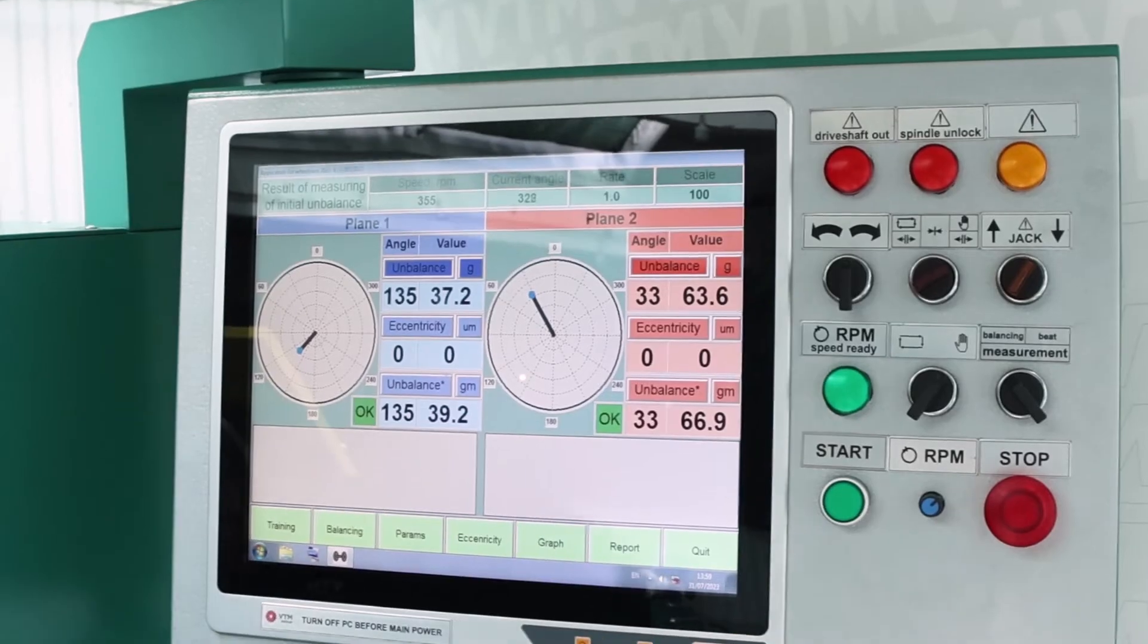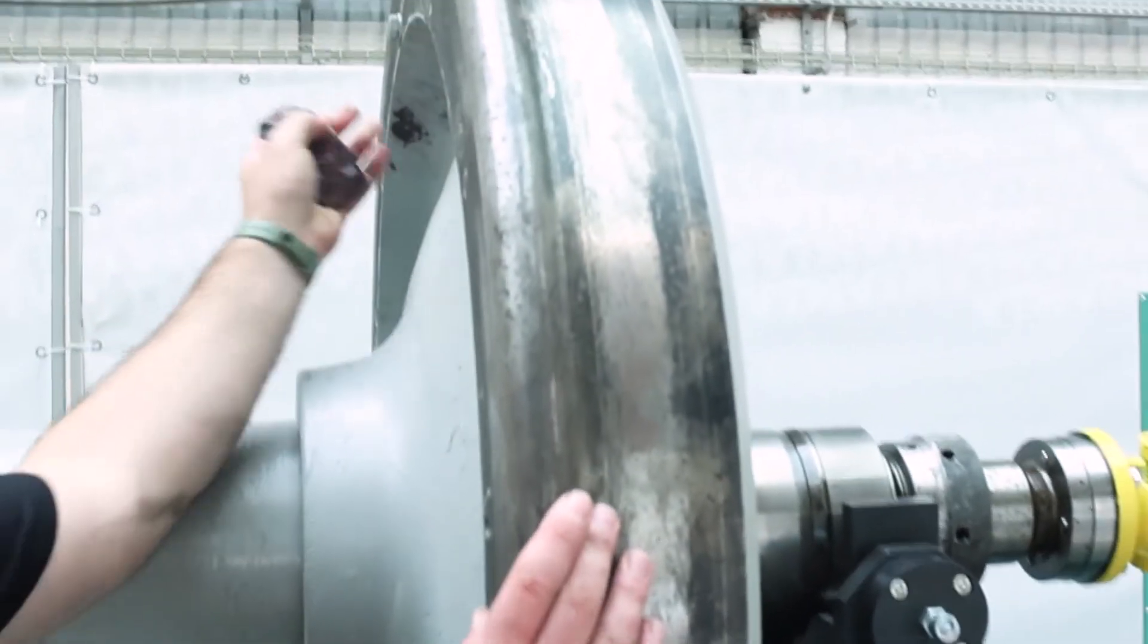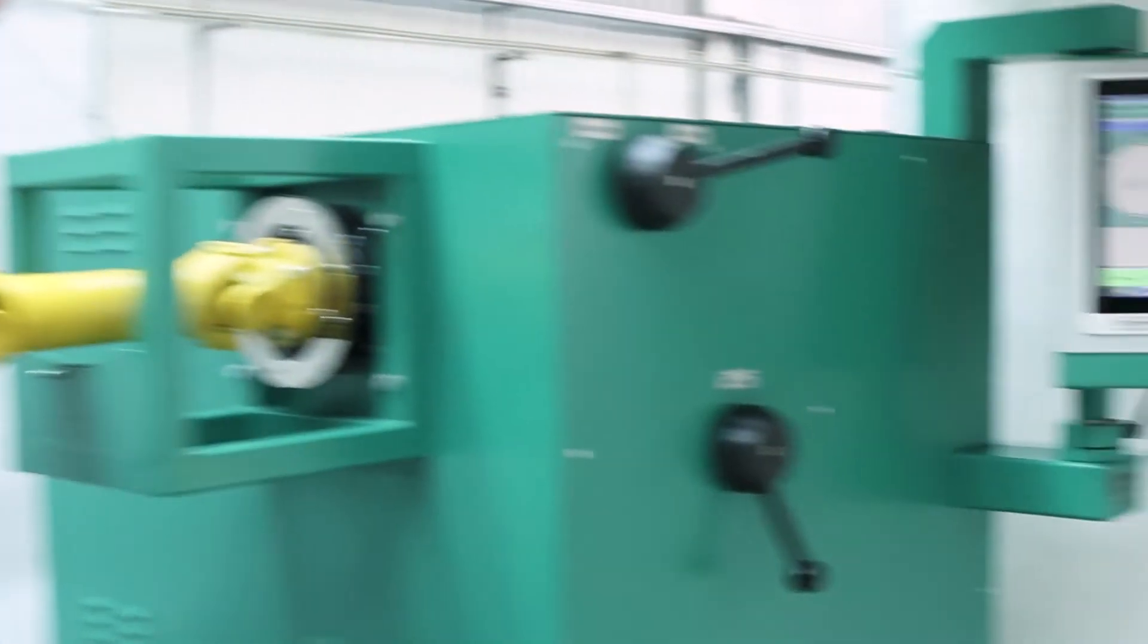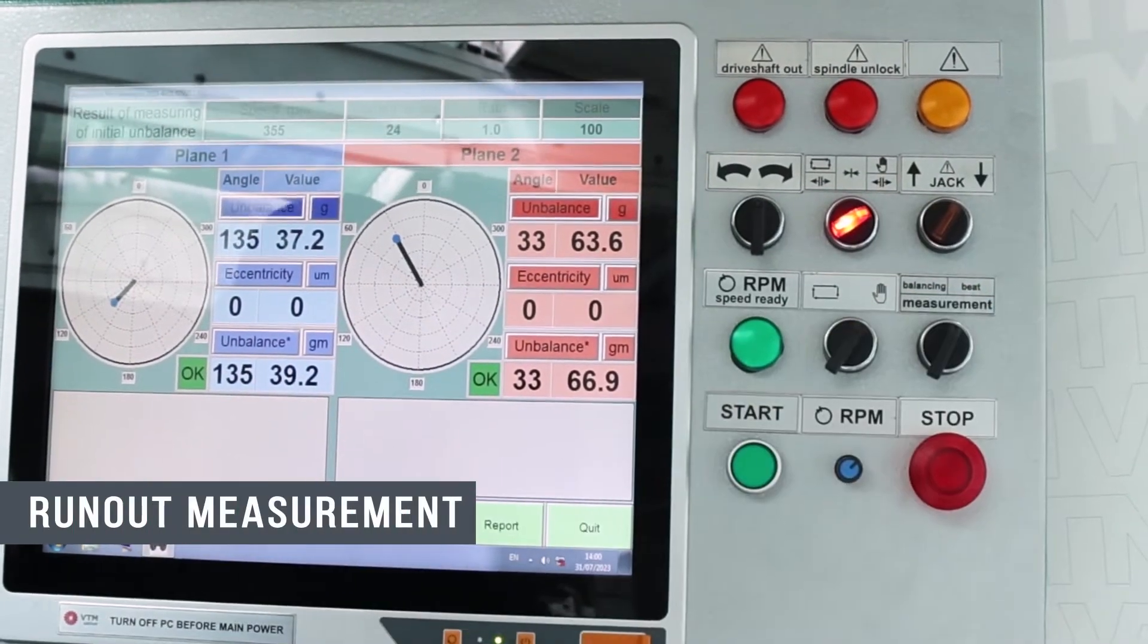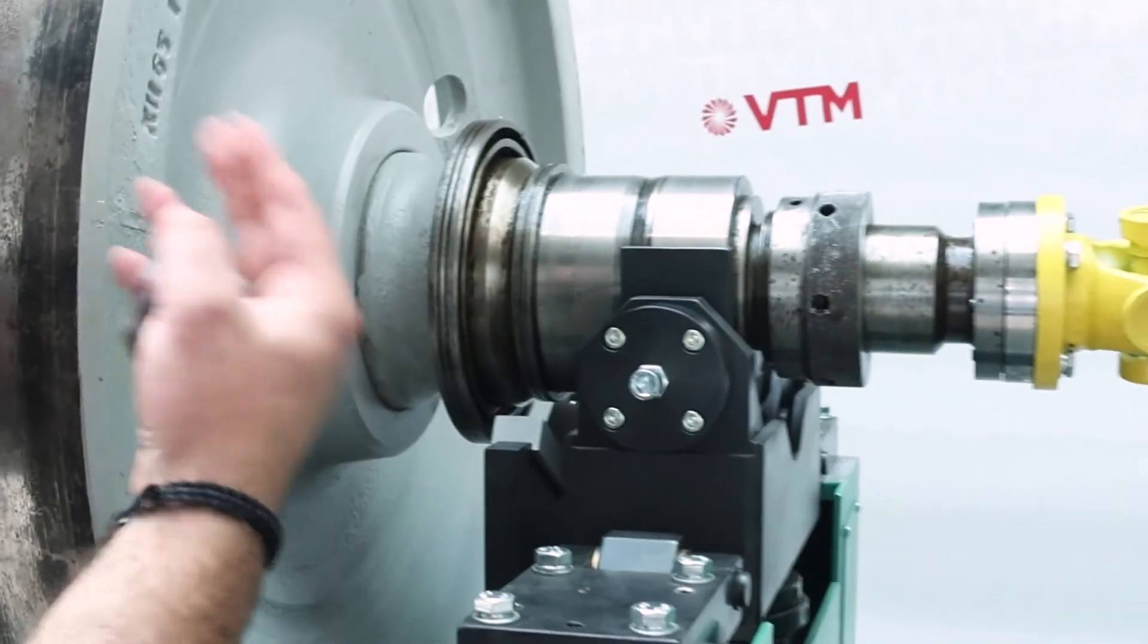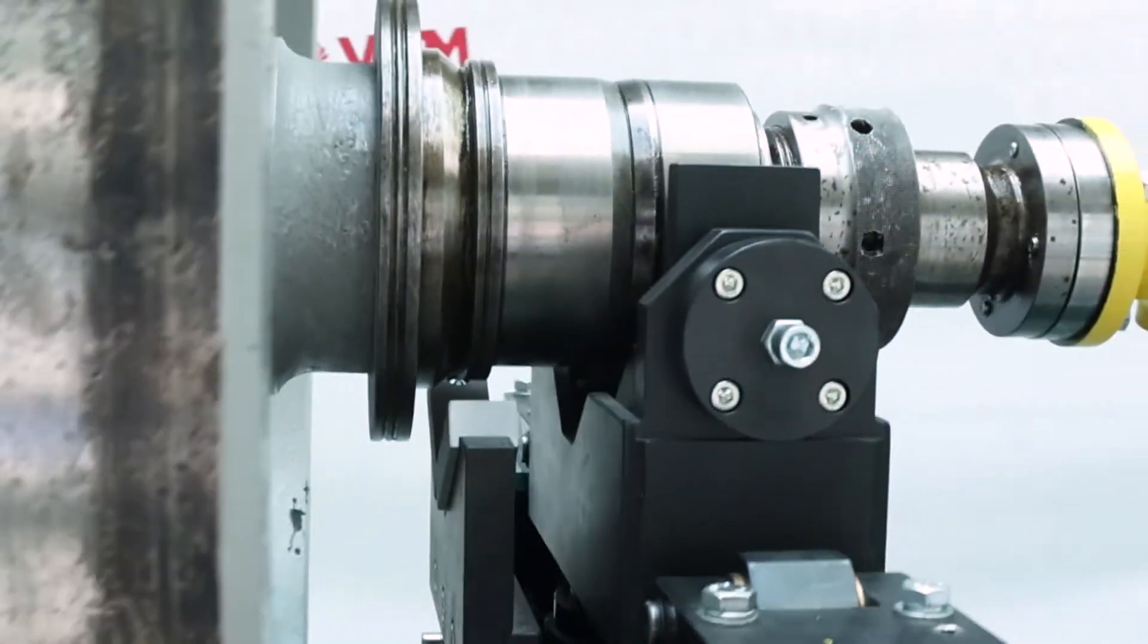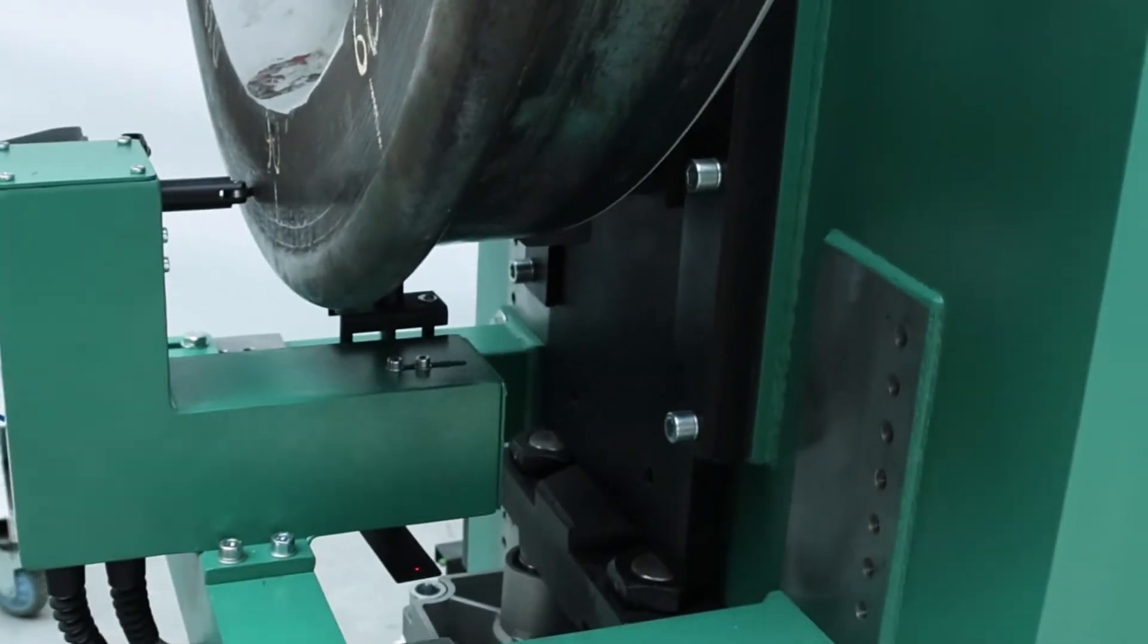Next, we remove our trial weight from the second plane and immediately switch to the run-out measurement mode. Switch to it. In this mode, the machine's suspension clamps are fixed, run-out sensors are connected to the wheelset on the second and first supports, respectively.